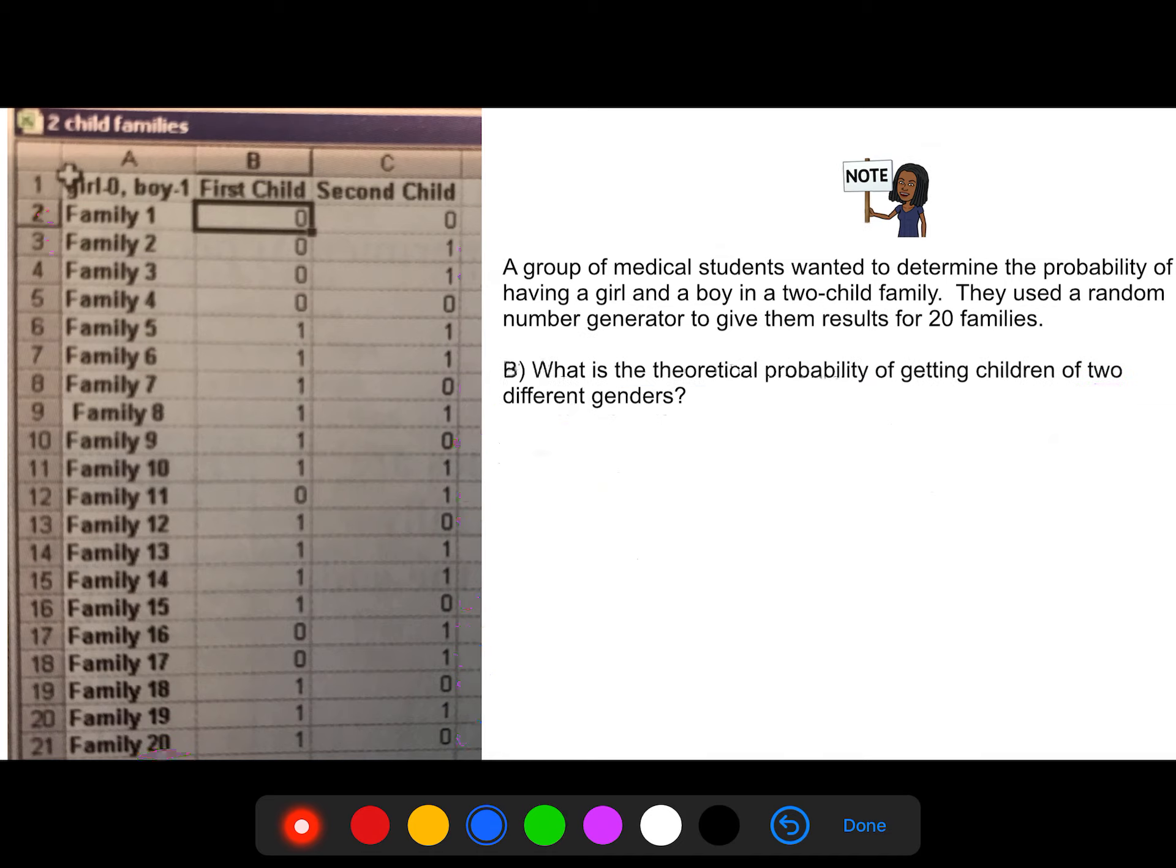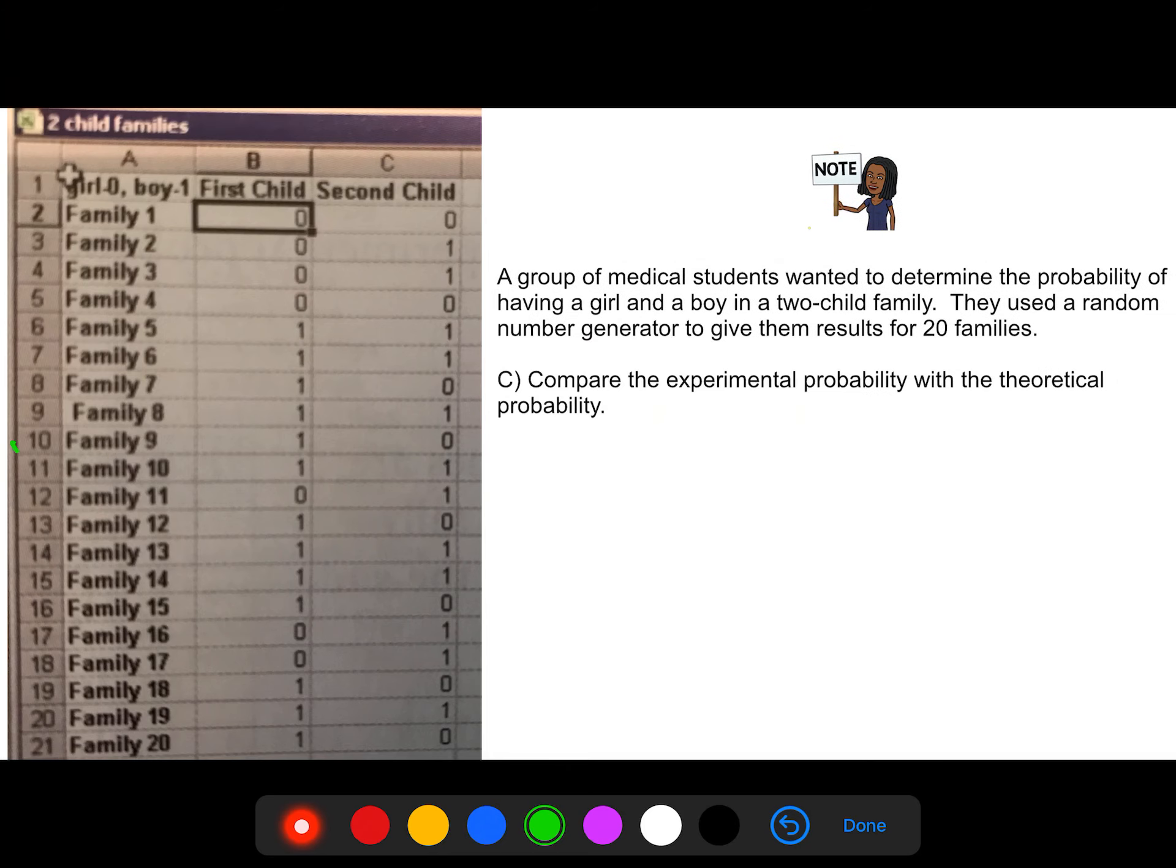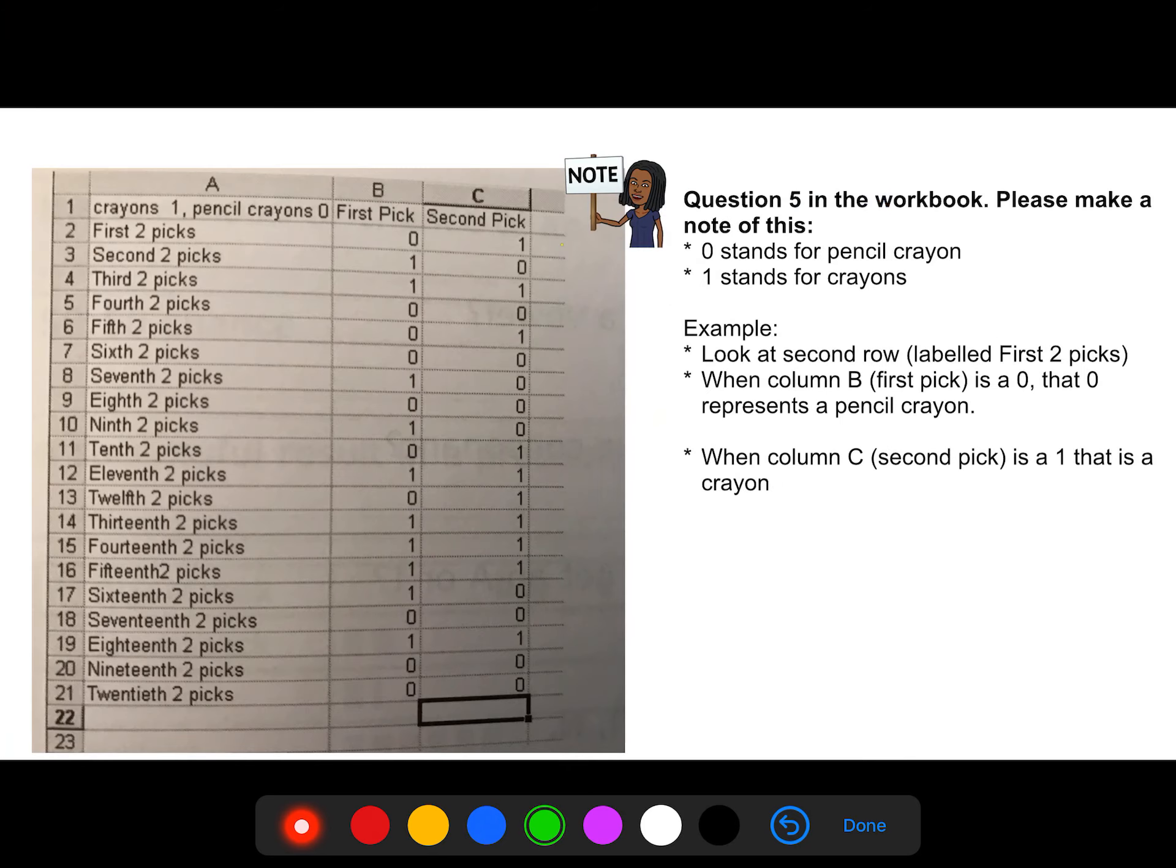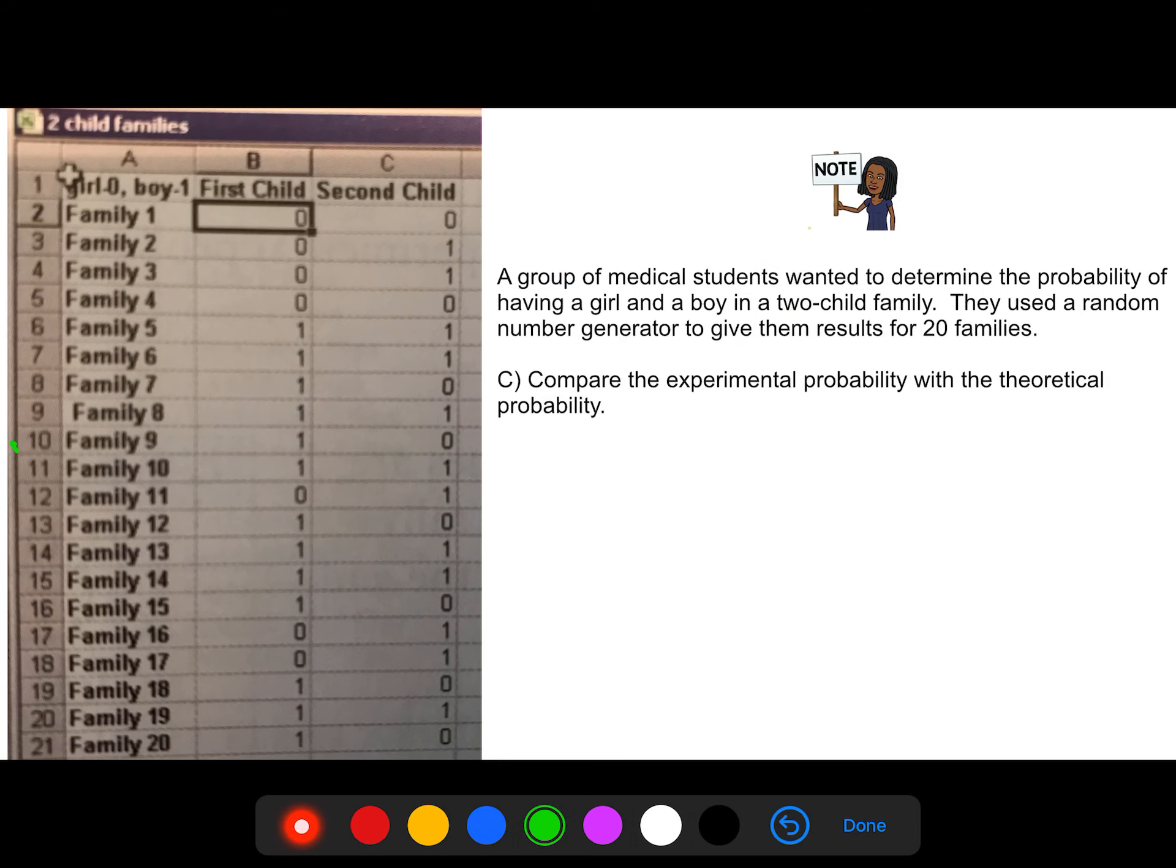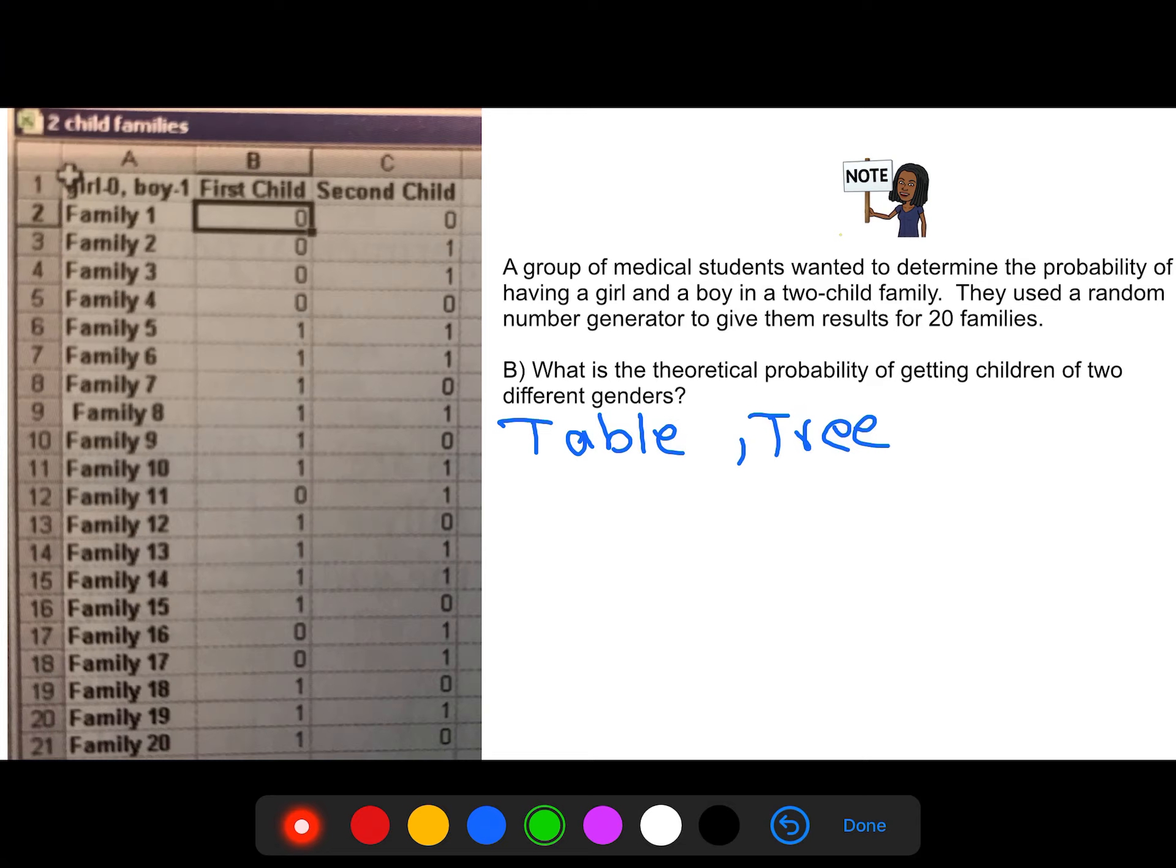Now, let's go over to B. B is the theoretical probability of getting children of two different genders. So this is where we would use either a table or a tree to create this. So we're using a table or a tree.